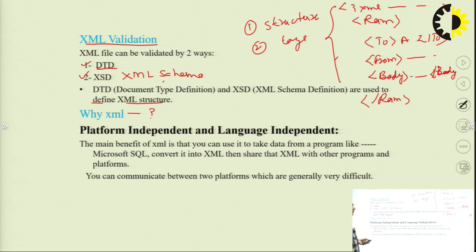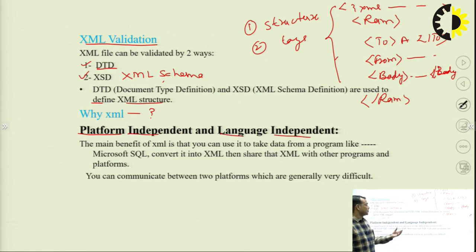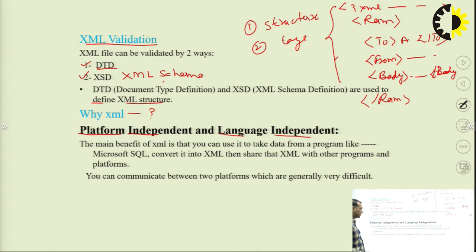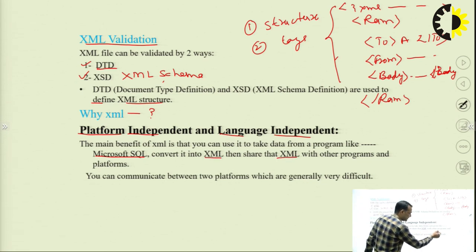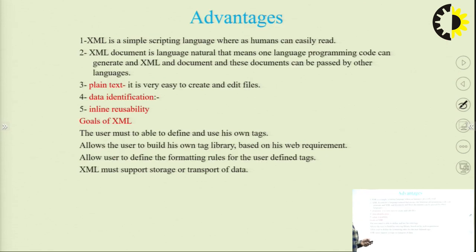Why do we use XML? As discussed, XML is platform independent and language independent. You can take a program file and share the XML with other programs and other platforms, and it can be used easily. That is why we use XML.